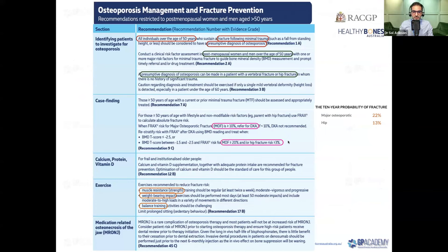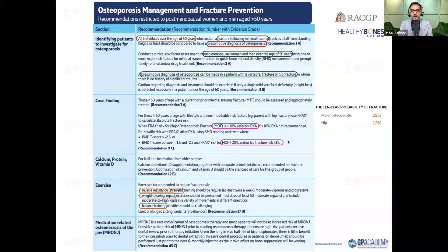All individuals over age 50 who sustain a fracture following minimal trauma should be assumed to have osteoporosis. Depending on which bone is broken — hip or vertebra versus other bones — further action varies. A presumptive diagnosis of osteoporosis can be made with vertebral or hip fracture and treatment started immediately, with DEXA scan as a bonus baseline. If fracture risk is less than 10%, a DEXA scan may not be needed.